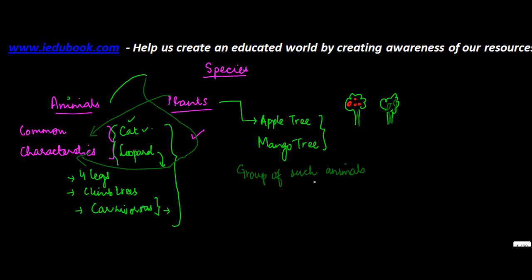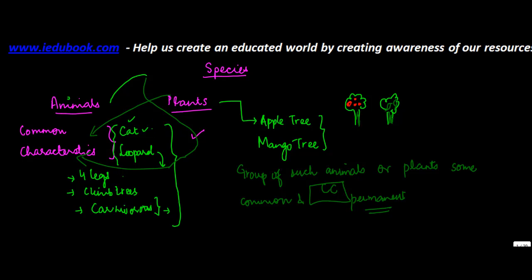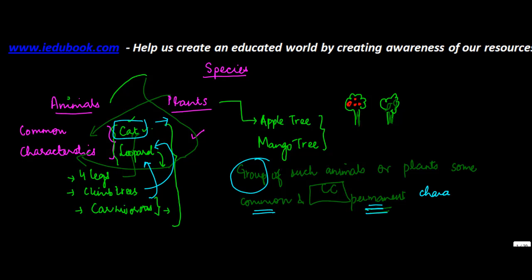A group of such animals or plants which have some common and permanent characteristics forms a species. These characteristics must also be permanent — for example, the legs of a cat are permanent, as are their eating habits and ability to climb trees. It's not that the cat will climb a tree one day and not the next. So these characteristics have to be both common and permanent.